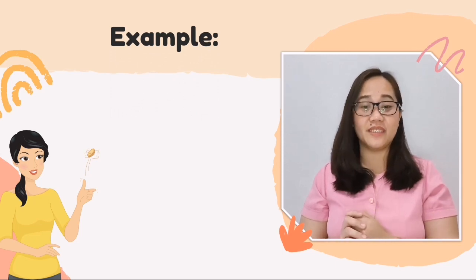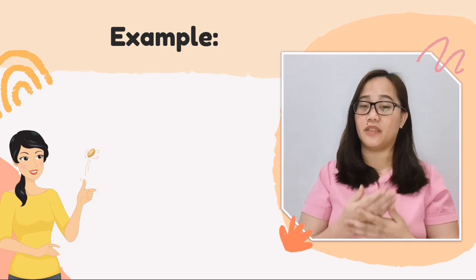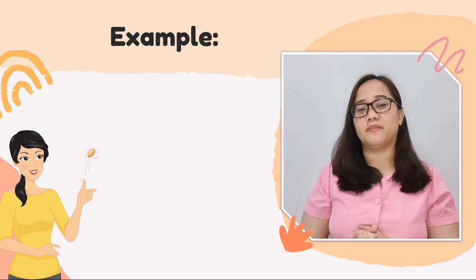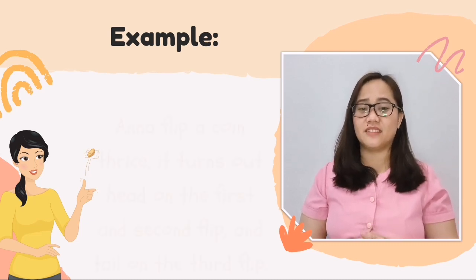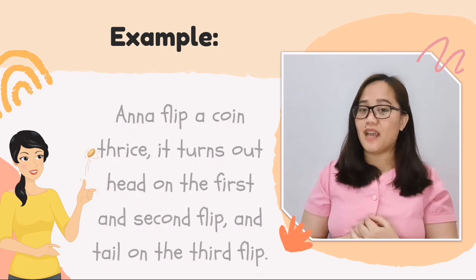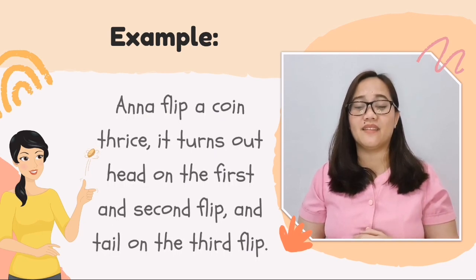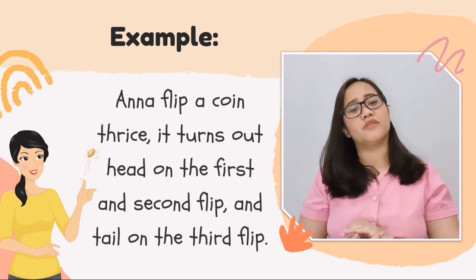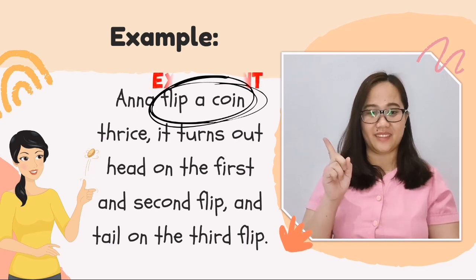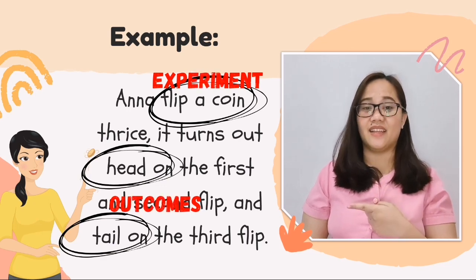Let's have an example for you to understand probability and recall the basic terms. Anna tried to flip a coin thrice, or three times, and it turns out head on the first and second flip and tail on the third flip. For this problem, the experiment is flipping a coin, and the outcomes are head and tail.